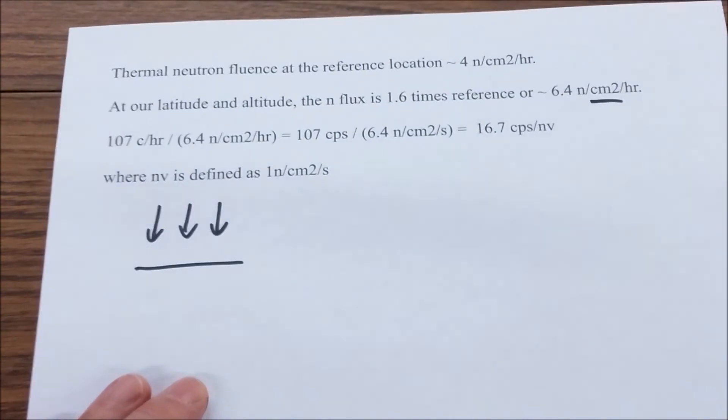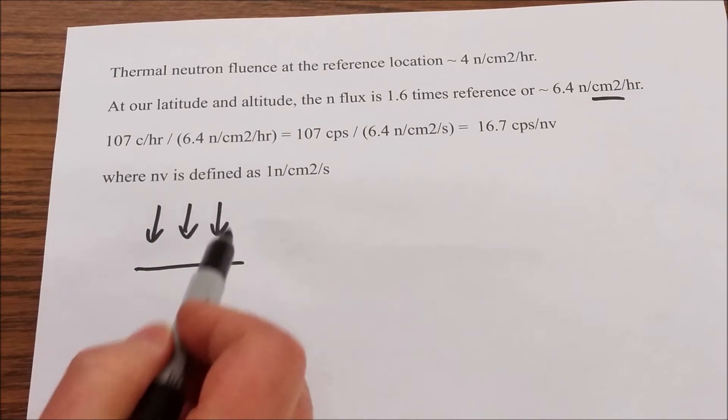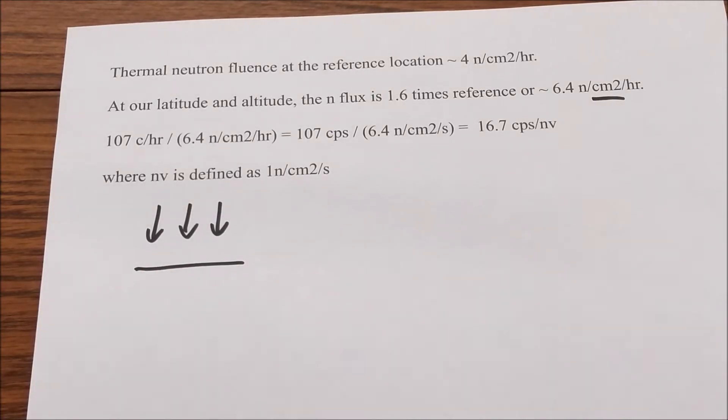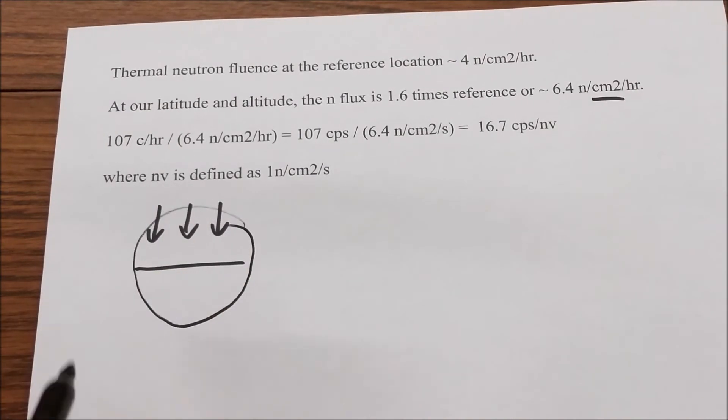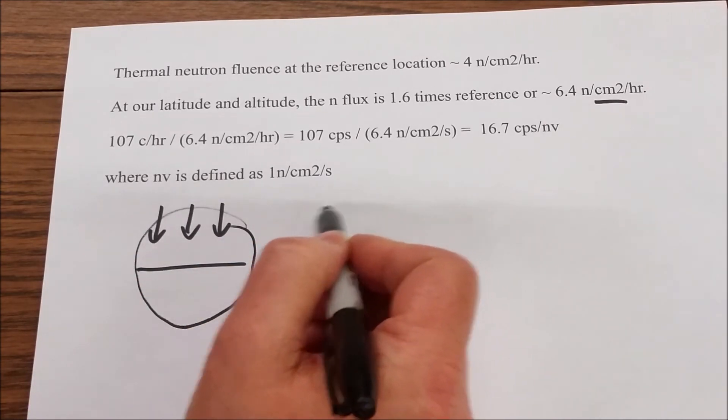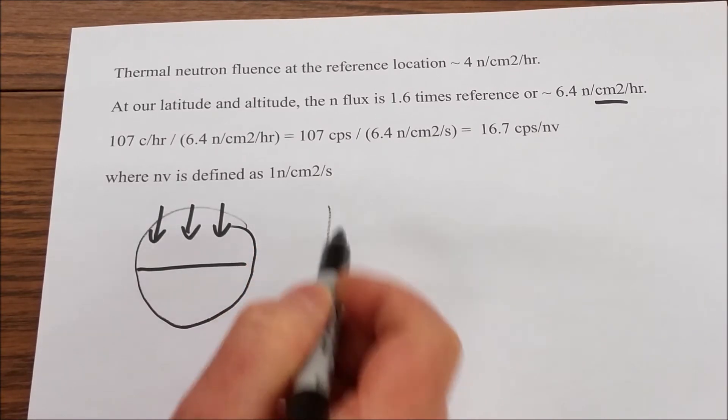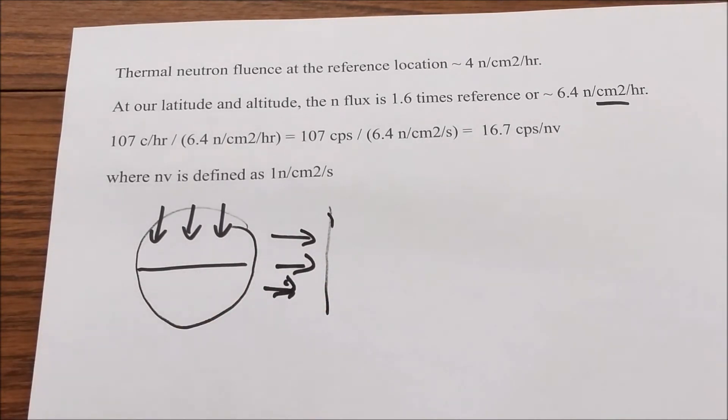And I think the issue is the way the neutron fluence is defined as per unit area. So that's assuming a planar detector. We've got a plane and we've got so and so many neutrons going through that plane. But we have a cylindrical detector. So not only do we see neutrons going through that plane, we also see neutrons that go through the perpendicular plane.